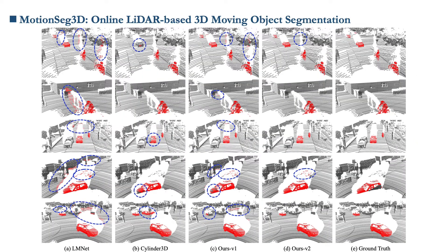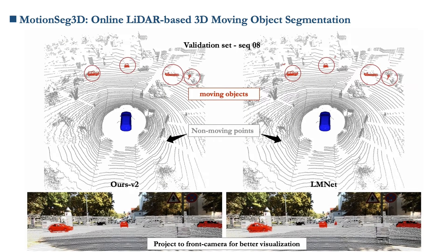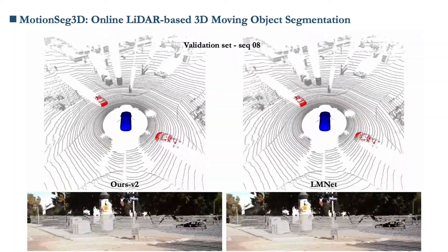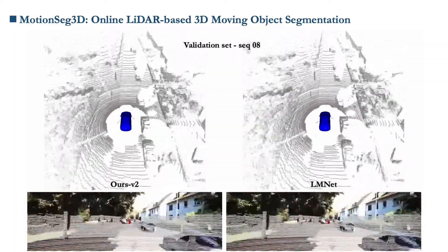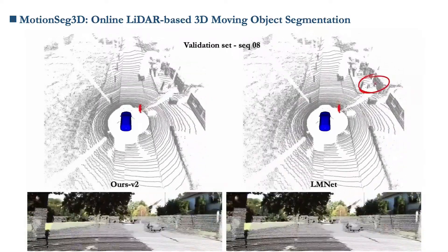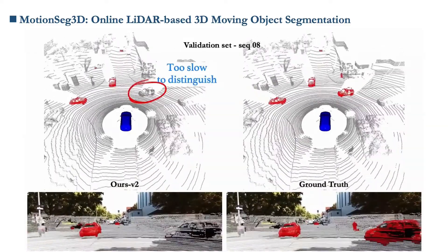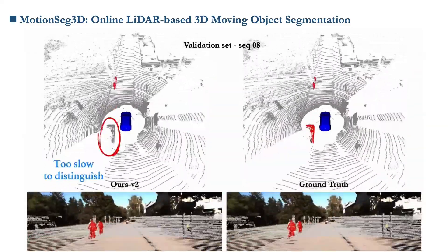We provide some qualitative comparisons. LMNet generates many wrong predictions on object borders, while the point-cloud-based method Cylinder3D often misses detecting parts of moving objects. Our method detects most points belonging to moving objects without introducing artifacts on object borders. In the video comparison, red points are moving objects and gray points are static. We project the point cloud to the front camera perspective for better understanding. LMNet is prone to blurred boundaries, while our method produces almost no blurred boundaries, though it can fail in some cases of extremely slow motion.